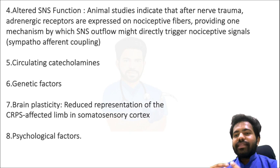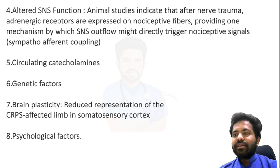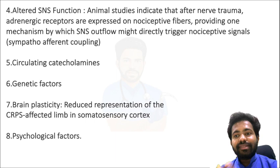There is also altered sympathetic nervous system function. Animal studies indicate that after nerve trauma, adrenergic receptors are expressed on nociceptive fibers. Catecholamines provide one mechanism by which sympathetic nervous system outflow might directly trigger nociceptive signals — a phenomenon known as sympatho-afferent coupling. There is also influence from circulating catecholamines from the adrenal glands.